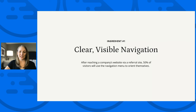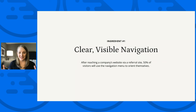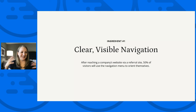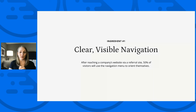Ingredient number one: you need clear, visible navigation. After reaching a website via a referral source — whether Google, a Facebook post, or something else — 50% of visitors will use the navigation menu to orient themselves and figure out where to go. I like to think of your home page like a hotel lobby: when you walk in, there's a system to orient yourself — check-in desk, elevator, bellhop — and your website navigation should work similarly.